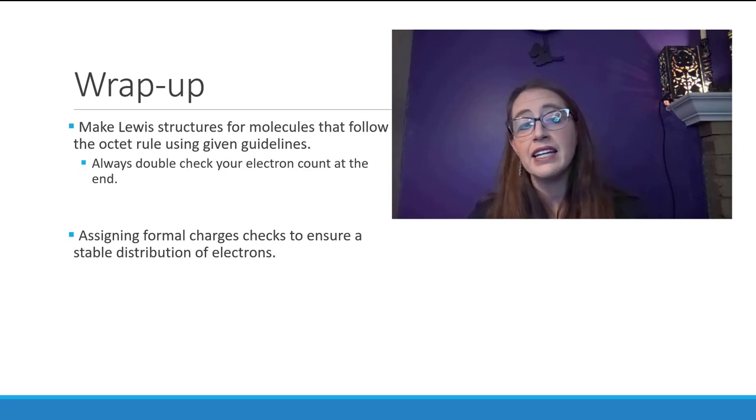We try to minimize formal charges, and then at the very end, we also want to always double check your electron count. That should be kind of your final step. We also will assign formal charges to check to ensure that there's a stable distribution of electrons. We didn't go into having to make that decision too much right now, and that'll get covered a little bit more when we cover resonance structures, and we really have to look at what are the formal charges, what are the stable resonance structures.